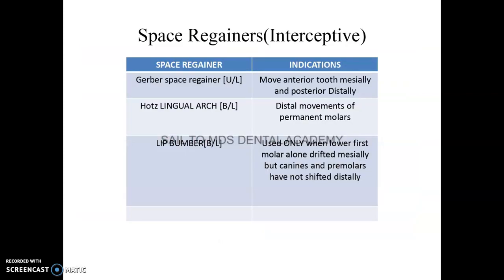Space regainers are part of interceptive orthodontics. Three important types: the Gerber space regainer is a unilateral regainer that moves anterior teeth mesially and posterior teeth distally. Hall's lingual arch is a bilateral space regainer that helps distal movement of permanent molars. The lip bumper is a bilateral space regainer used only when the lower first molar has drifted mesially but the canines and premolars have not shifted distally.